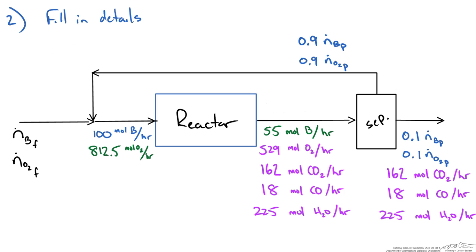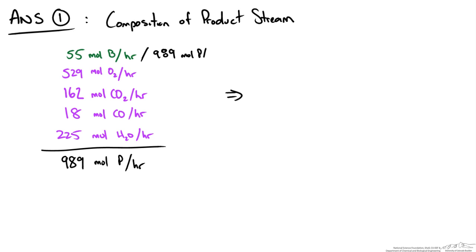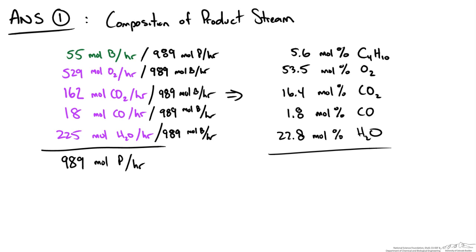The first part of the question asked for the composition of the product stream leaving the reactor. Now that we have all flow rates, we sum them to get a total molar flow rate of 989 moles per hour. Dividing each component by that total gives mole fractions: butane is 5.6 mole percent. Completing this for all species gives the full composition, which sums to approximately 100 mole percent — a minor 0.1% discrepancy is due to rounding; carrying more significant digits resolves this.